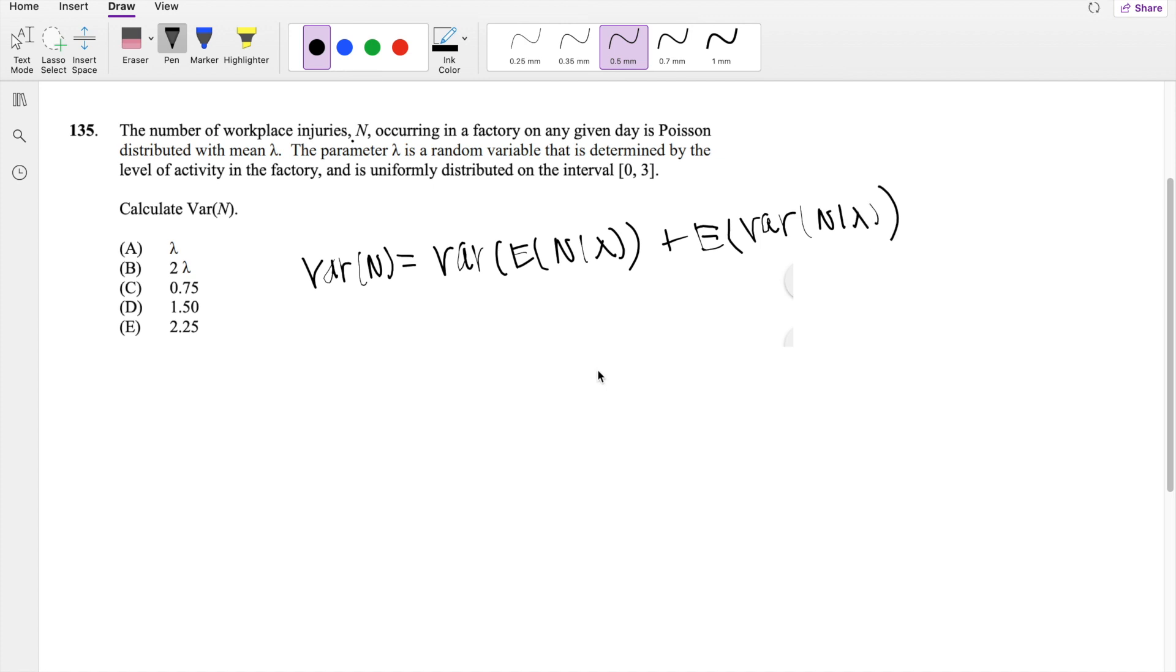But you guys might be asking, how did you even know to use the law of total variance? And that's because we know that this Poisson distribution with mean lambda, lambda is another variable, so it's given lambda such that this n, then the function of this n will be a Poisson distribution, with lambda being equal to lambda.